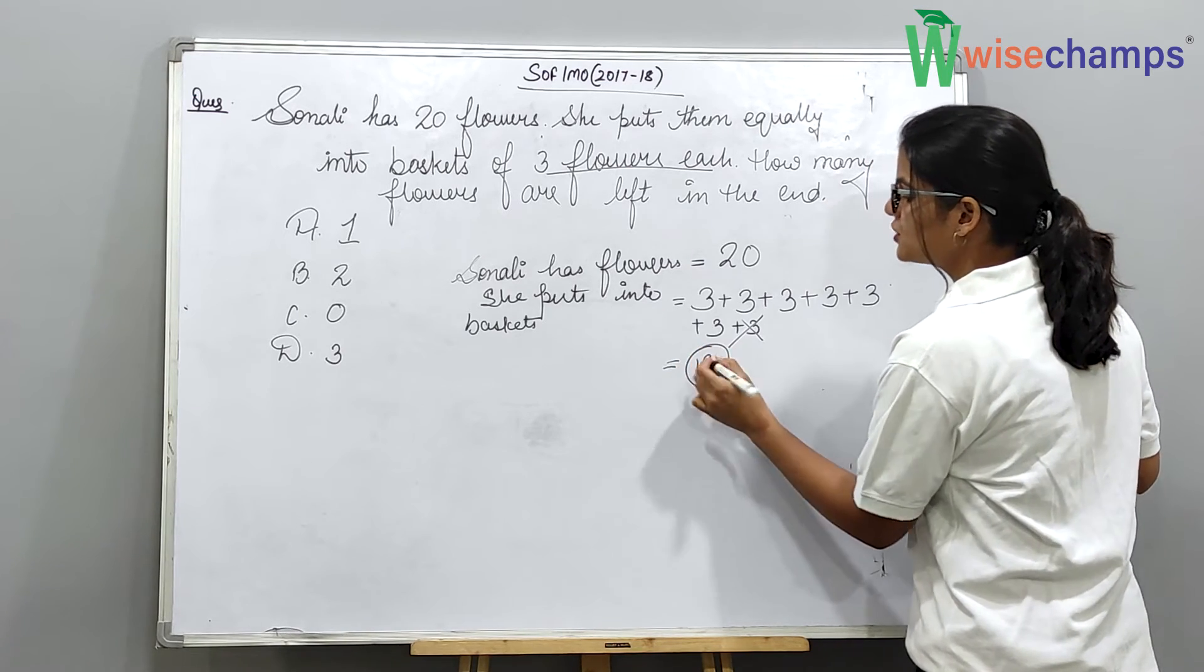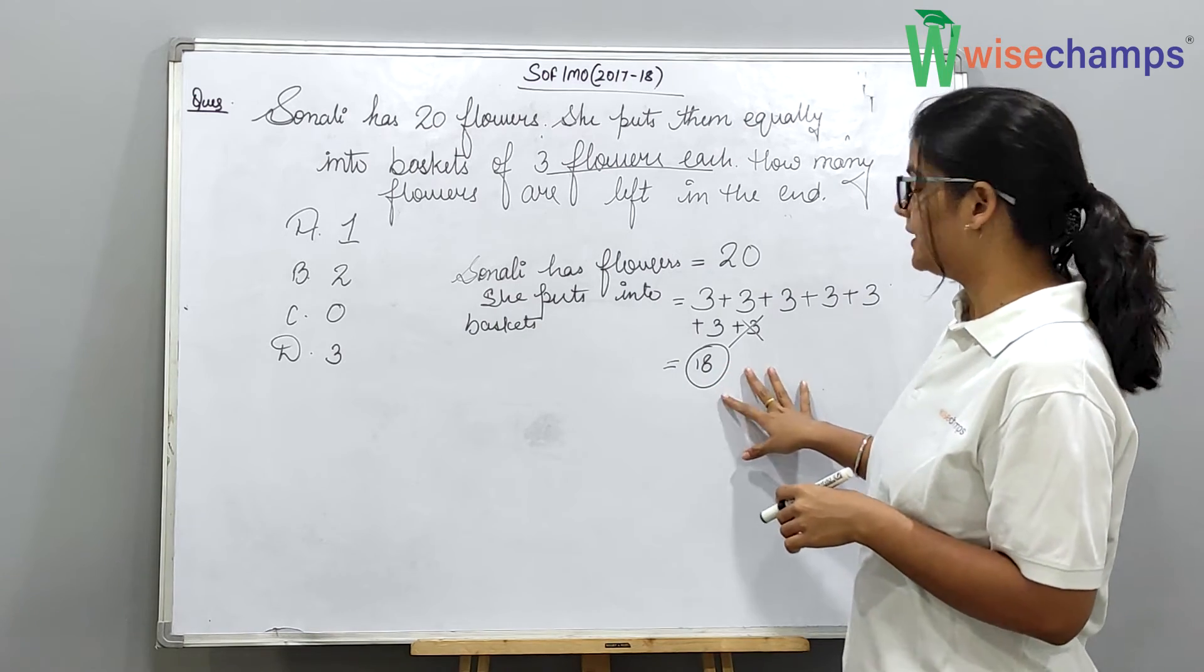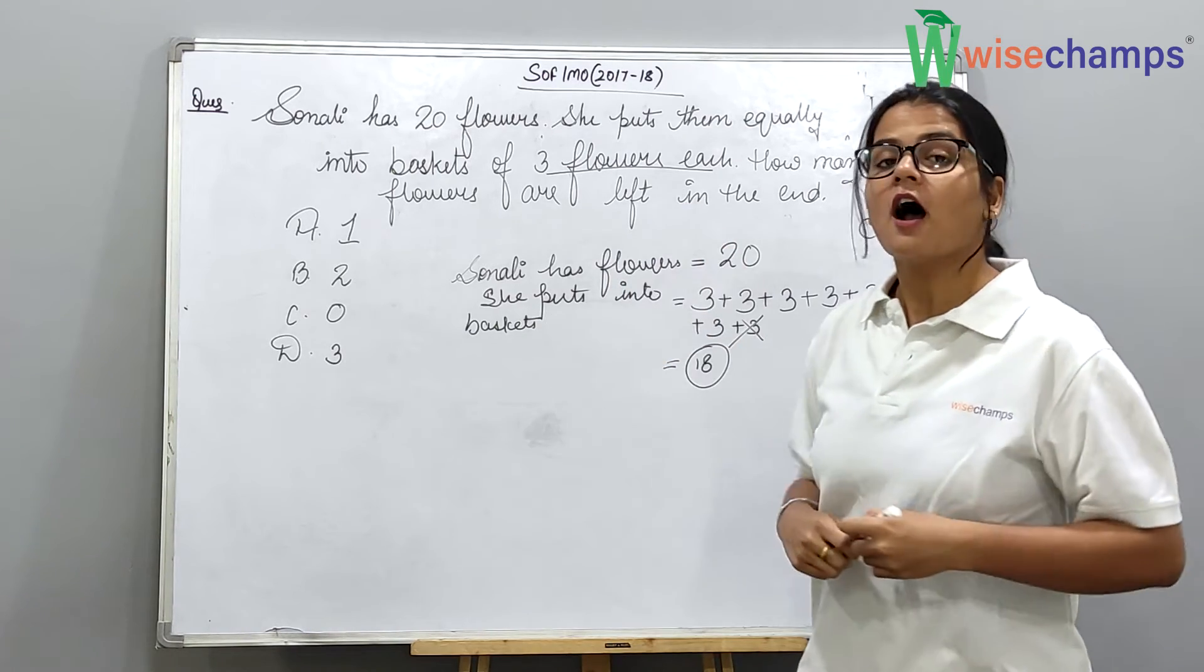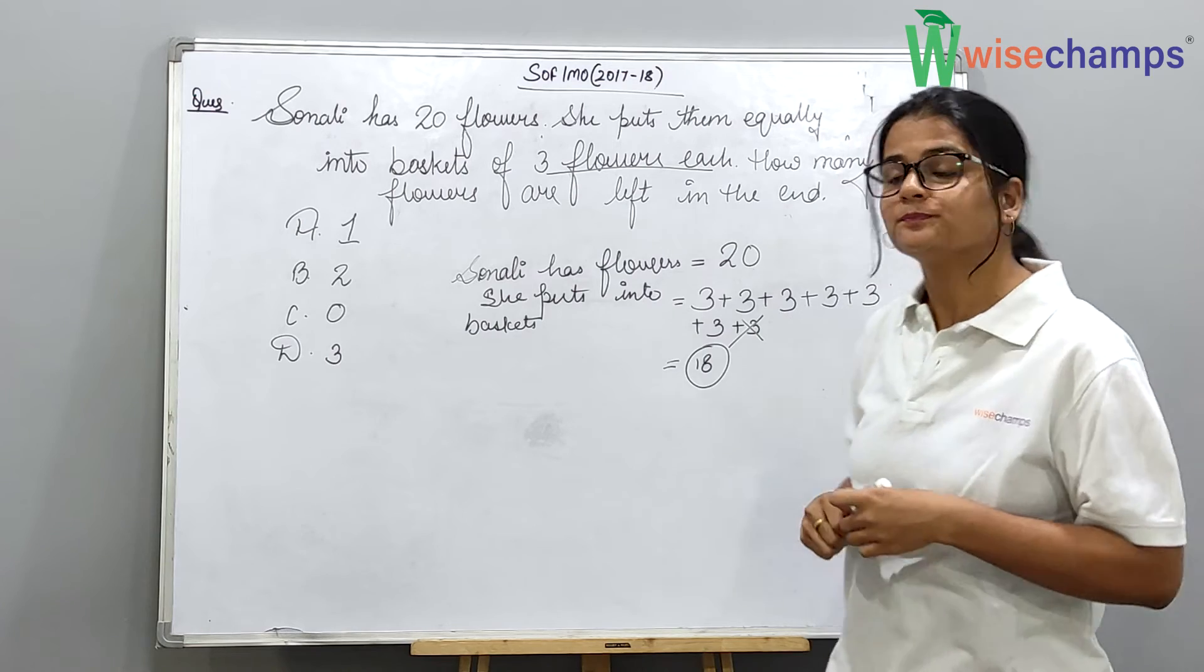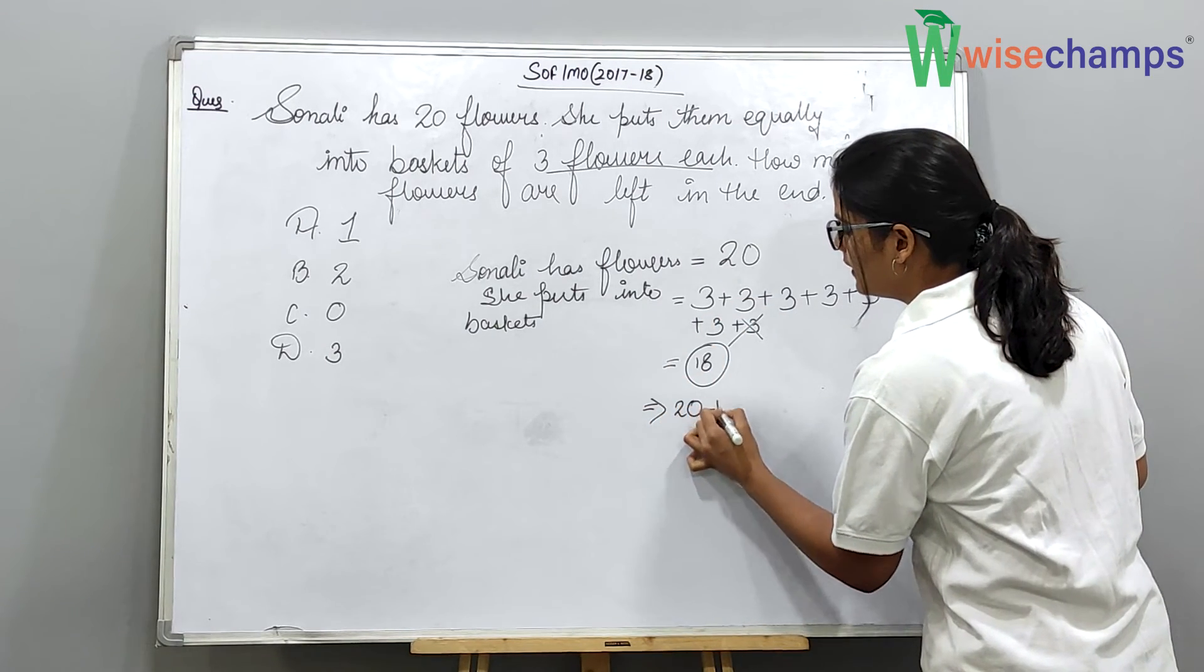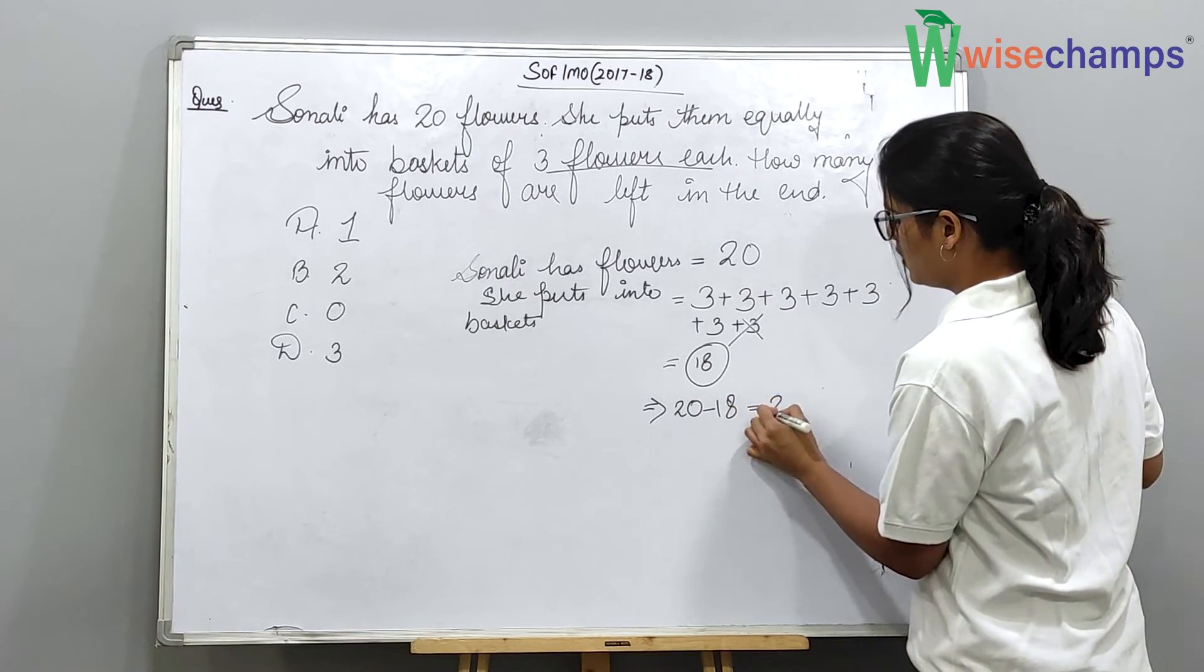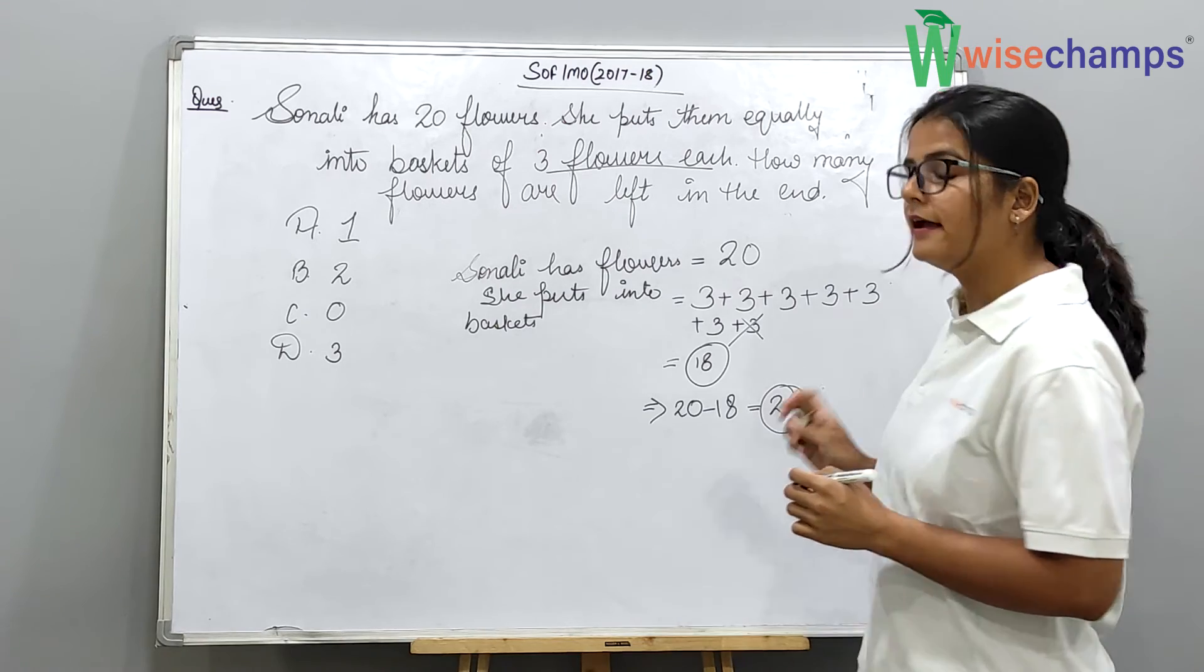So 18 flowers she put into the basket. And after putting all 18 flowers into the basket, how many flowers are left? What will we do here? We will minus 18 to 20. So, 2 flowers are left.